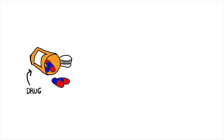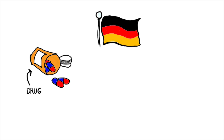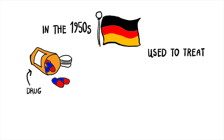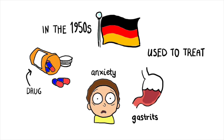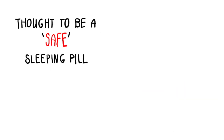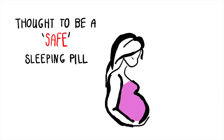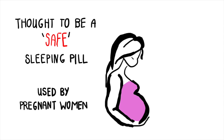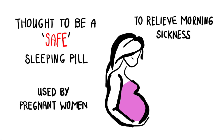Thalidomide was a drug made in Germany in the late 1950s, initially used to treat anxiety, gastritis and insomnia. It was marketed as a safe sleeping pill and therefore used by pregnant women to relieve morning sickness.